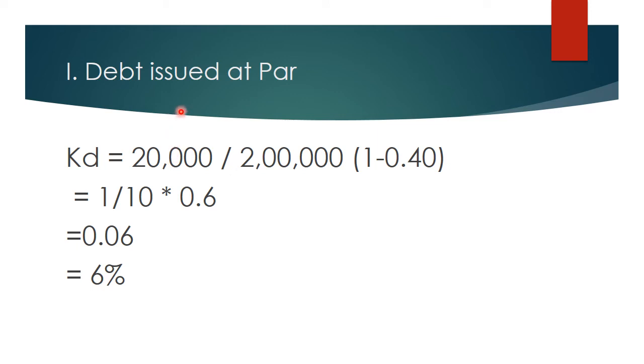So, in the first case, debt issued at par, cost of debt becomes... see, the debentures are at 10%, the interest rate is 10%. So, 10% of 2 lakh rupees is 20,000. Interest upon principle, I upon P, that is I upon 2 lakhs multiplied by (1 minus 0.40). So, 20,000 upon 2 lakhs is 1 upon 10 multiplied by 0.6. So, it becomes 0.06 that is 6%. So, for a 10% debenture, because of the tax effect, the net practical cost of debt becomes 6% when it is issued at par.